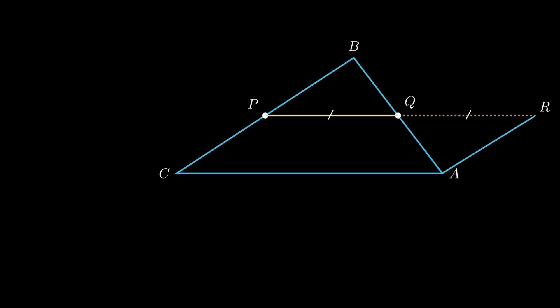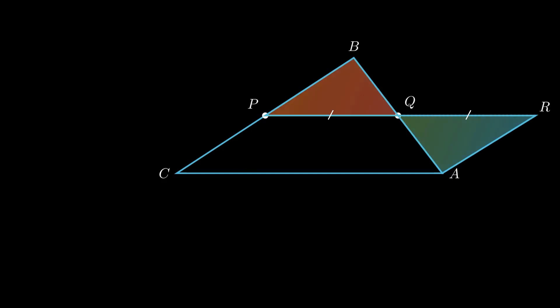Join point A to point R resulting in the formation of triangle AQR. Now consider triangle PBQ and triangle AQR. These two triangles can be proved congruent as angle BQP is equal to angle RQA because vertically opposite angles are equal.